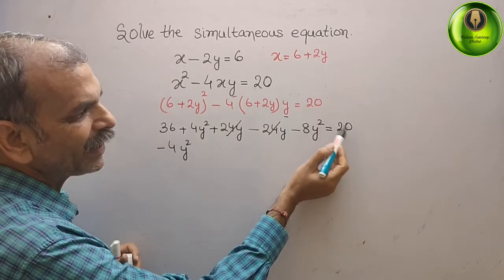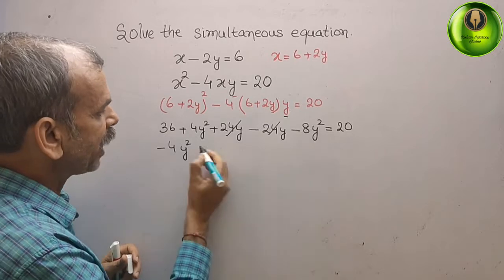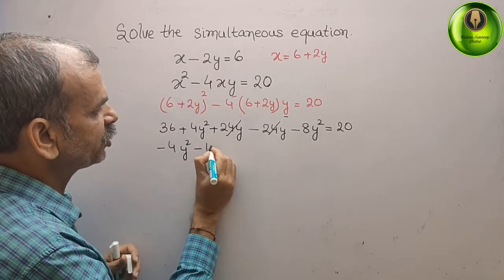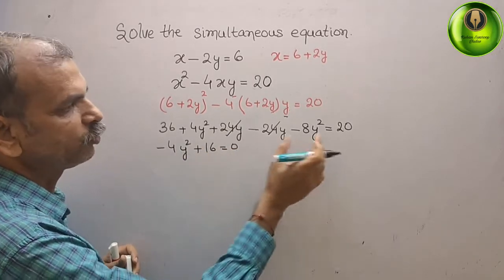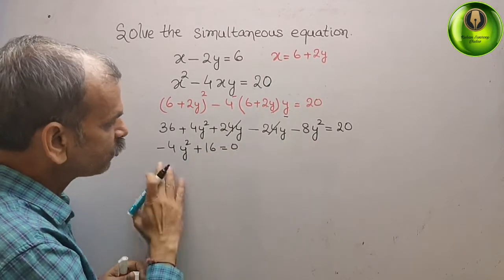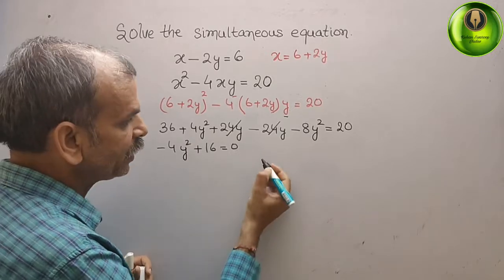Next comes your 36 minus 6 and minus 20 is minus 16 is equal to 0. Sorry, plus 16 is equal to 0. Now change the sign. What you will get?